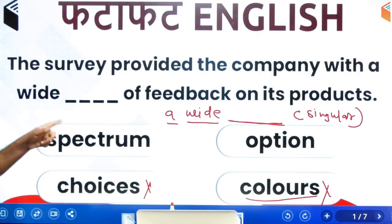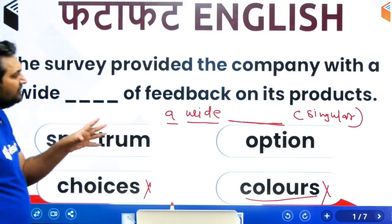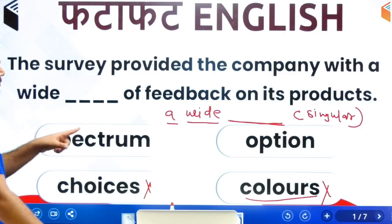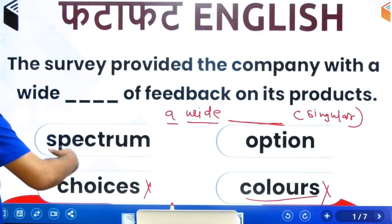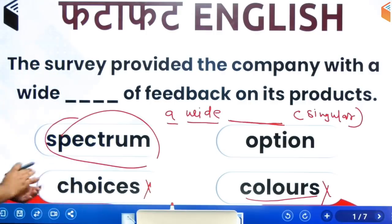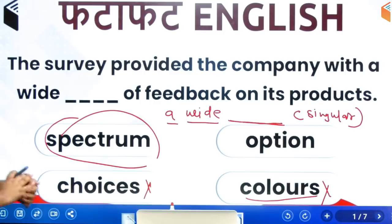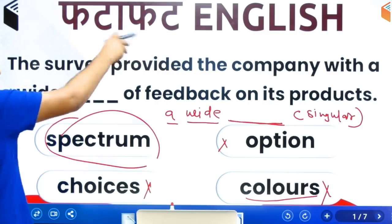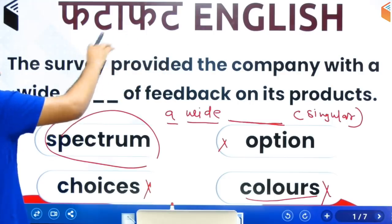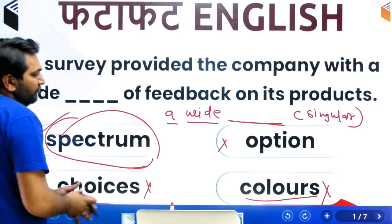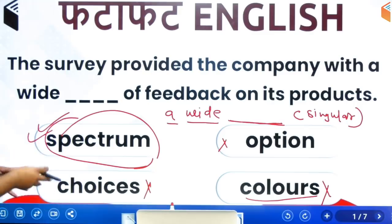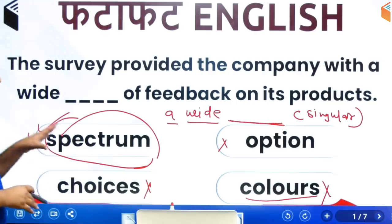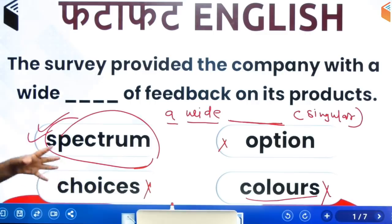A wide dash — so in the blank, either 'spectrum' will come or 'option' will come. Now, looking at the feedback the company received, we will choose based on sentence meaning and context. The survey provided the company with a wide dash of feedback on its product. 'Spectrum' means a wide range of opinions in a particular area — the 'spectrum' word represents that. So 'option' will not be right. The correct sentence is: The survey provided the company with a wide spectrum of feedback on its product.